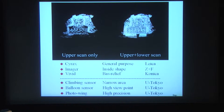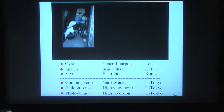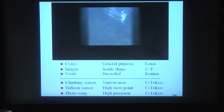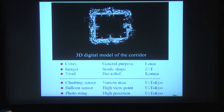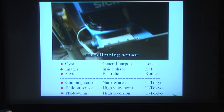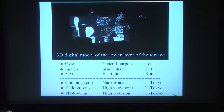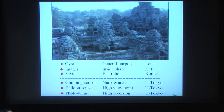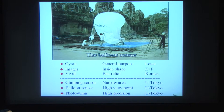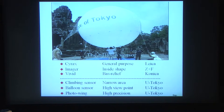To scan open spaces and corridors, an omnidirectional laser sensor named Z Plus F Imager was used, capturing the entire structure with a small number of scans. For narrow spaces between the terrace and corridor, a Climbing Sensor that moves vertically along a ladder was developed. For the upper sides and roofs — not practical to scan from scaffolds — we used a balloon sensor, a laser sensor suspended under a balloon, with two different laser sensors alternately equipped depending on the distance to the target.